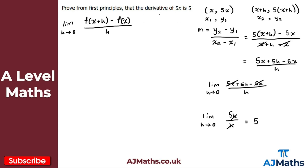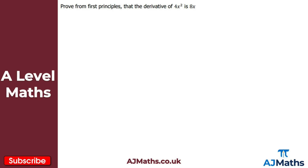That was a straightforward example. Now we'll look at a slightly more complicated one, going straight into the formula without showing the gradient step in as much detail. This time we want to prove from first principles that the derivative of 4x² is 8x. The coordinates are (x, 4x²) and (x+h, 4(x+h)²).